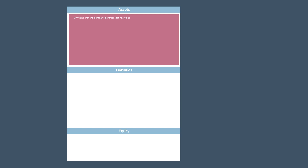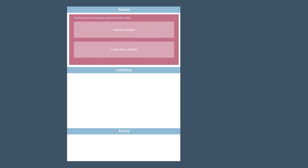Conceptually, an asset is anything that the company controls that has value — anything that benefits the company. Within the assets section, companies will further subcategorize their various assets by current assets and long-term assets. Current assets are those that can be converted into cash within one year, whereas long-term assets are those that cannot be converted into cash within one year. The ability to convert assets into cash is known as liquidity. The items in the assets section are ordered based on decreasing liquidity — the assets that can be most easily converted into cash are listed first, while those that are most difficult to convert into cash are listed last. Naturally, items in the current assets section are ordered before long-term assets.